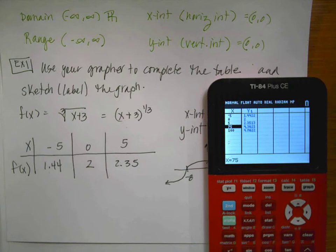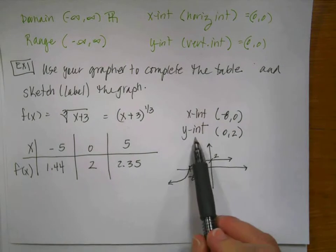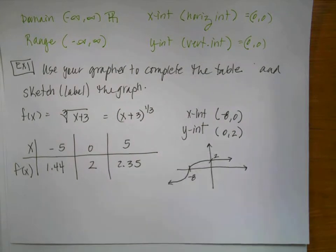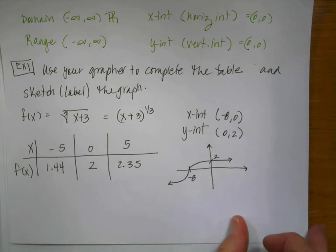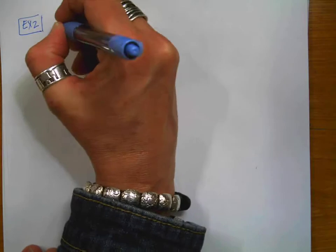So that is kind of how we use our grapher nice and efficiently. We've already sketched the graph and labeled it. And I've already listed my x and y intercepts. Let's move on and do our second example. We only have two today. Nice and short.